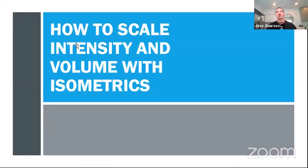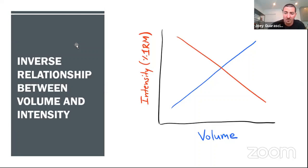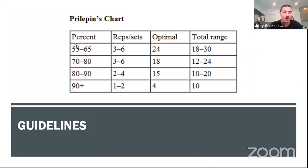How do you scale intensity and volume in isometrics? With anything, it boils down to the inverse relationship between volume and intensity. The more intense the exercise, the less duration it's going to be and the less volume you're going to prescribe — just like all the other program variables.